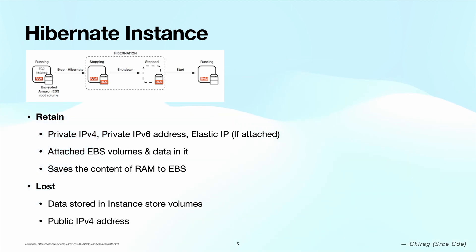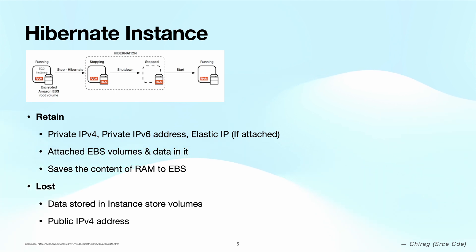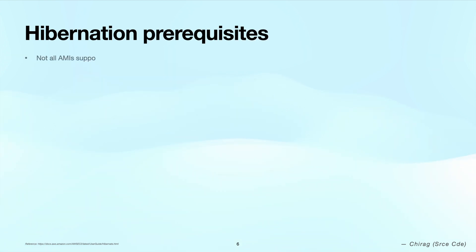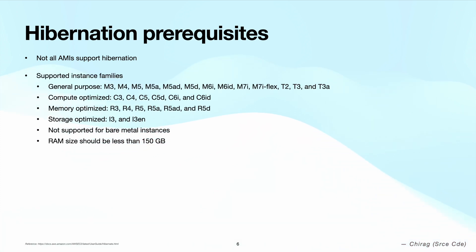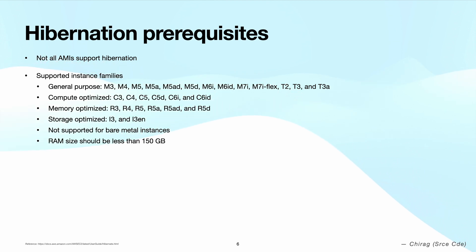This is the high-level difference between stopping an instance versus hibernating an instance. However, you cannot just hibernate any instance — there are certain hibernation prerequisites and limitations to keep in mind. Not all AMIs support hibernation; I recommend checking the link in the description for an up-to-date list. Not all instance types support hibernation; as of today, supported instance types include instances from the M series, T series, C series, R series, and I series.